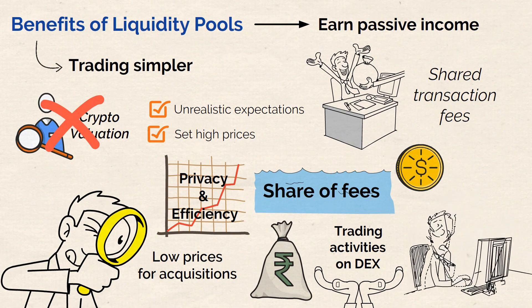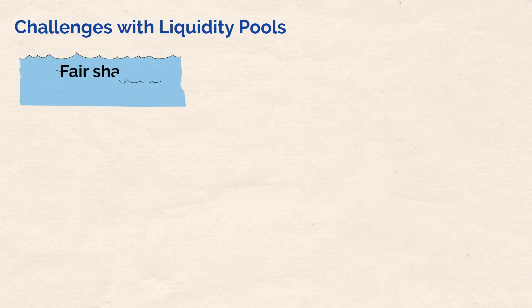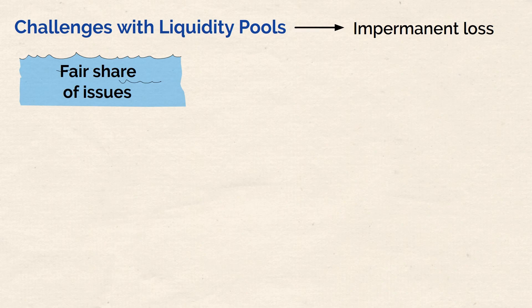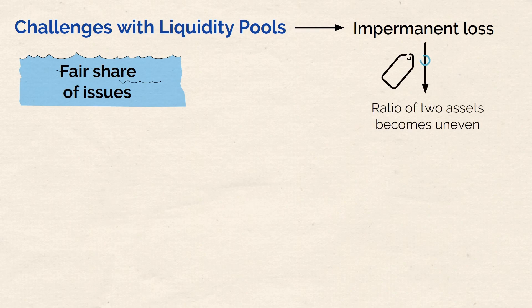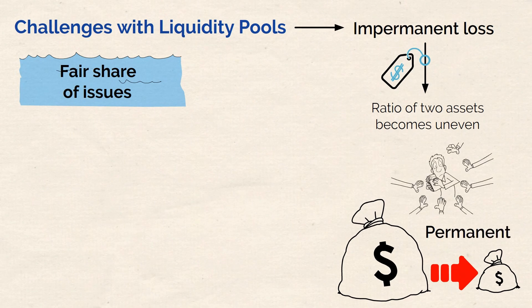Of course, liquidity pools also have some drawbacks. The first problem is known as impermanent loss. This issue arises when the ratio of two assets held in the liquidity pool becomes uneven due to a sudden price surge in one of them. As a result, as a liquidity provider, you may lose profits from one of the assets you put into the pool. This loss can become permanent if you withdraw funds from the pool before the affected asset's price recovers.